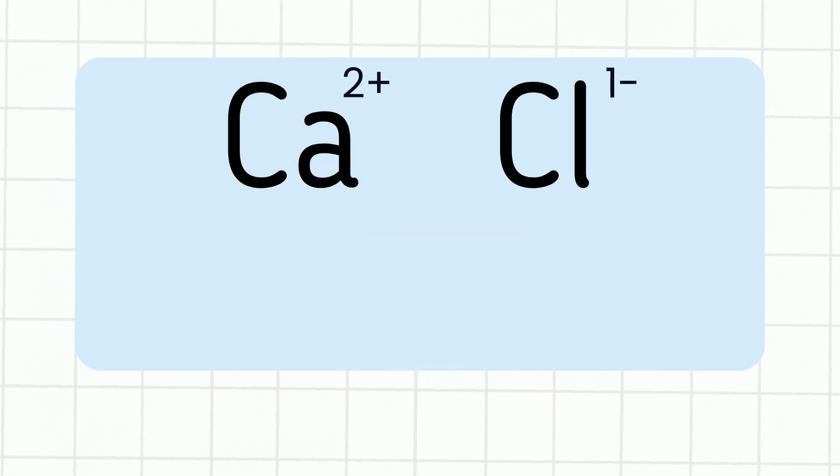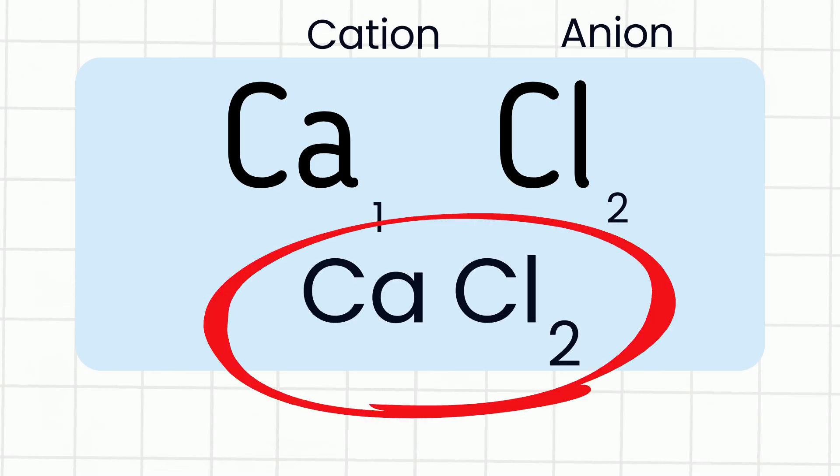And finally we have calcium ion with a plus 2 charge, chlorine with a negative 1 charge. Cation goes first, anion goes second. We're going to do the crisscross method. When we crisscross we take the 2 of the calcium, it goes with the chlorine. The 1 charge of the chlorine goes with the calcium. So we end up with CaCl with a subscript of 2.